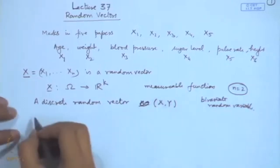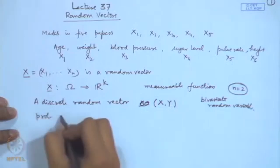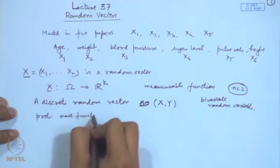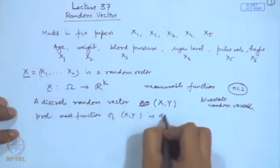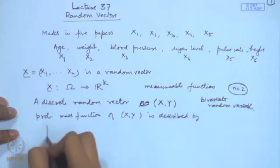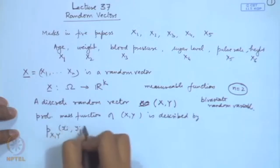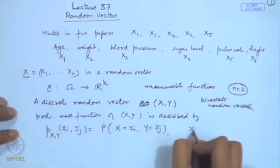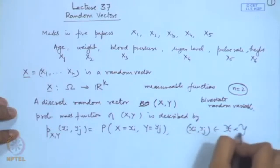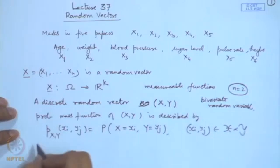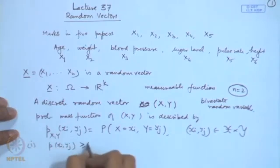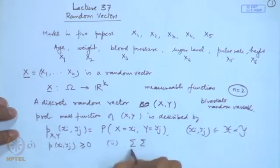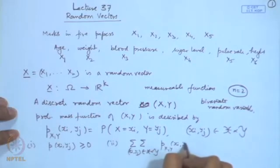If we say it is discrete, we can consider the probability mass function. The probability mass function of (X, Y) is described by p_{XY}(x_i, y_j) = P(X = x_i and Y = y_j), for (x_i, y_j) belonging to some space of values. We have two conditions: p(x_i, y_j) ≥ 0, and the sum over all possible values equals 1.